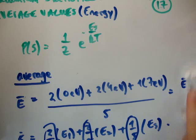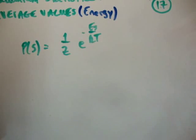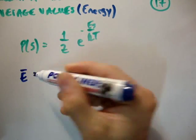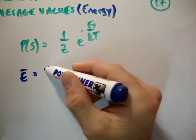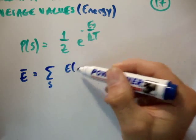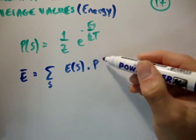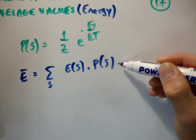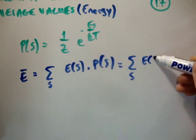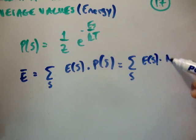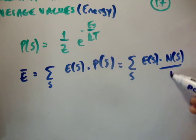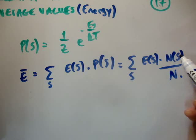Let's go ahead and write that in a different manner. So we can now say that the average energy, e bar, is equal to the sum over s of the energy multiplied by the probability. I'm going to call it the P of s, which is the sum over s of the energy multiplied by the total number like that.